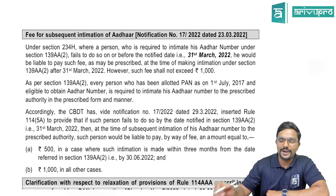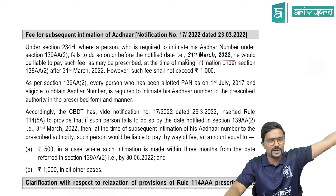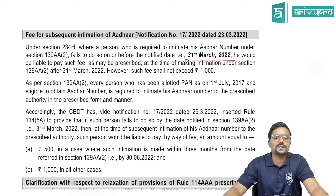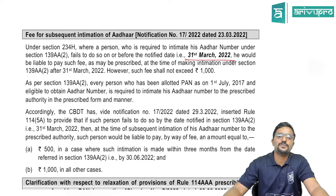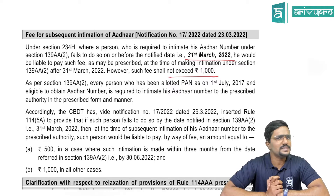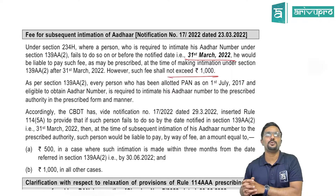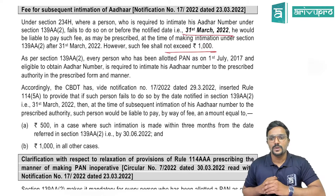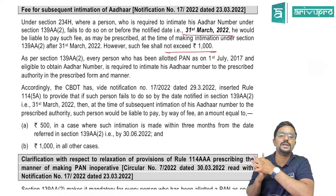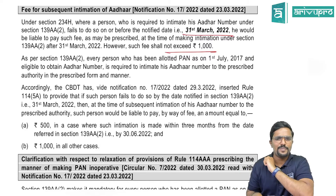The notified date was 31st March 2022. The fee structure as per Rule 114(5A) inserted through Notification Number 17/2022 dated 29th March 2022 is: if Aadhaar is linked on or before 31st March 2022 — no late fee. Such fee shall not exceed 1,000 rupees under Section 234H. Specifically: 500 rupees where the intimation is made within three months from 31st March 2022 — that is by 30th June 2022 — and 1,000 rupees in all other cases.